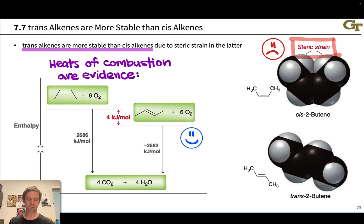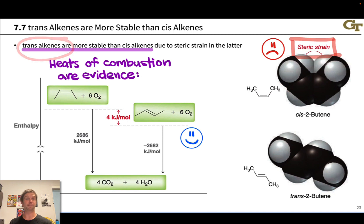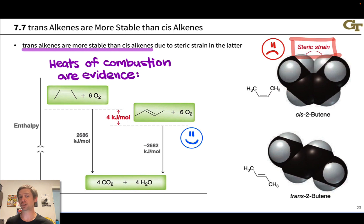The upshot: trans alkenes are more stable than cis alkenes, all other things being equal. In thermodynamically controlled reactions where the most stable product is the major product, trans alkenes will be the major product over cis alkenes. We'll see this in a number of elimination contexts.